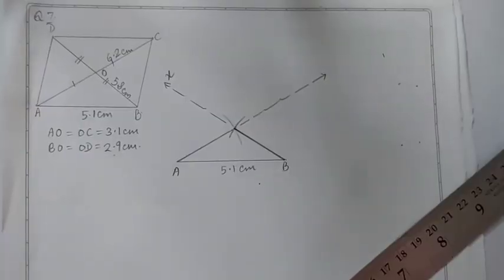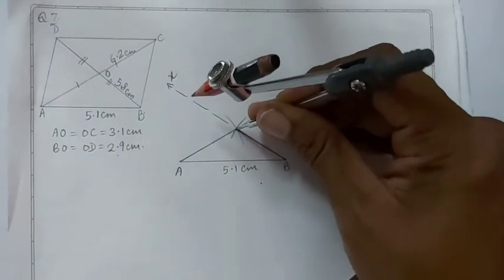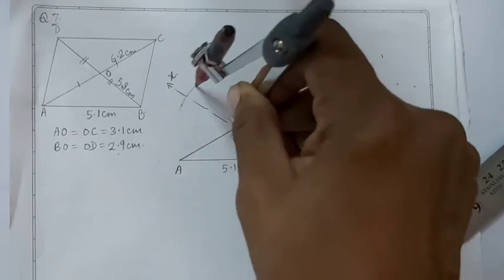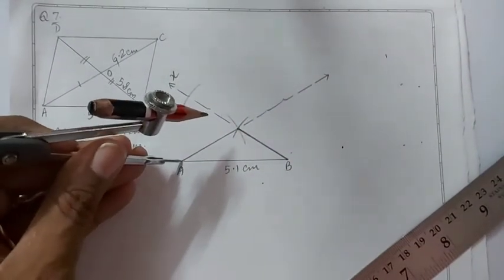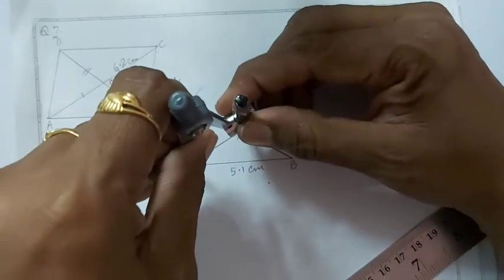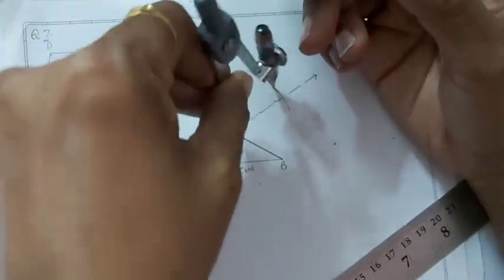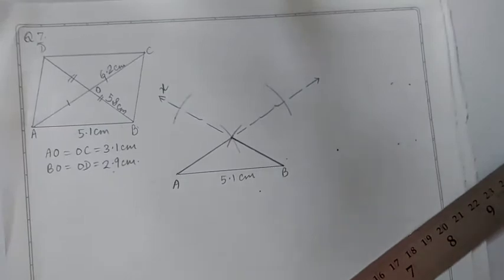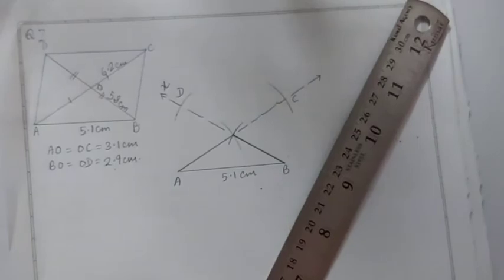With radius PO we will cut arc from center O intersecting the ray OX. Similarly with the radius AO. Those are points C and D.